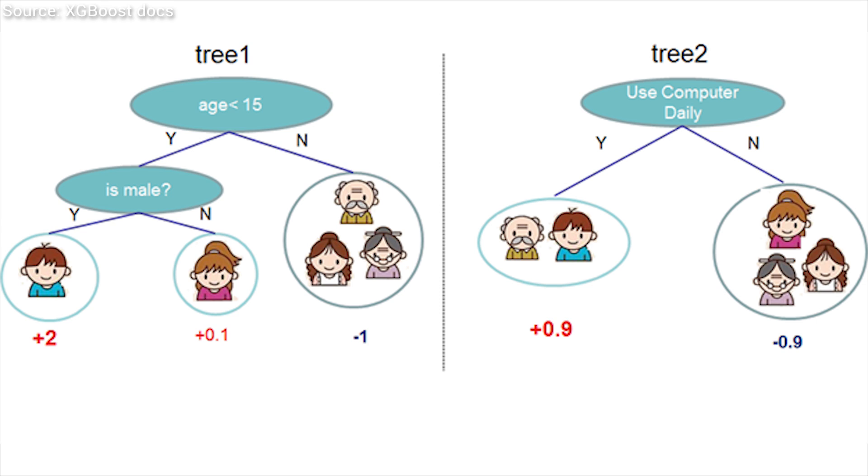And now comes the cool part. The concept of tree boosting means that we take many weak learners and combine them into a strong learner. Using the mentioned scoring system instead of decisions also makes this process easy and straightforward to implement.